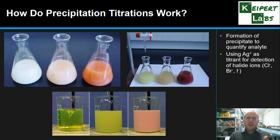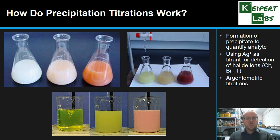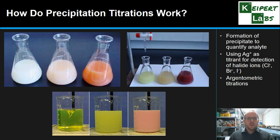As we add silver into a solution with chloride ions, or vice versa, we get a precipitate that forms. And as a result, because we're using silver in each of these examples, they're sometimes known as argentometric titrations — argentum being the Latin for silver, where the symbol Ag comes from. So because silver is the key ingredient, that's where that name arises.